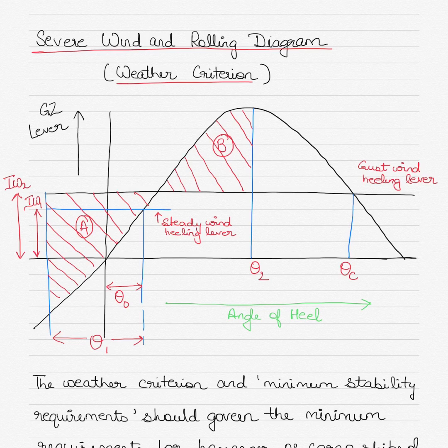GZ, as you know, is the righting lever which acts on the vessel when the vessel starts to heel on one side. It is the righting lever that tends to bring the vessel back to her upright condition.